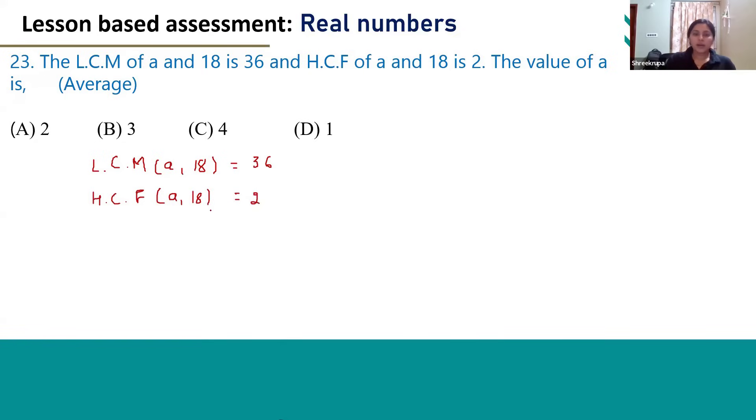So, we know the relationship between HCF of two numbers and LCM of two numbers and the numbers themselves which is HCF of A and B multiplied by LCM of A and B will be equal to the product of the given numbers.